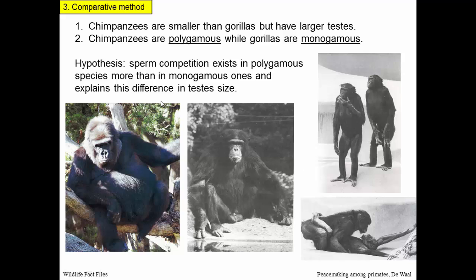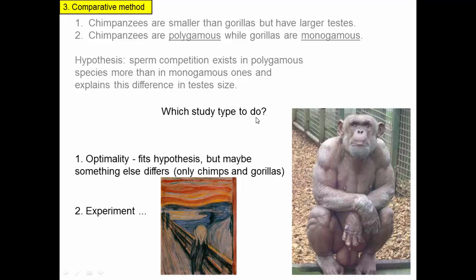That's the hypothesis, but right now we just have an anecdote — just two species. Maybe there's something else going on. Optimality fits the hypothesis, but there are a number of other features that differ between chimps and gorillas. We could imagine some sort of experiment, but that's not appealing here. So let's use the comparative method.